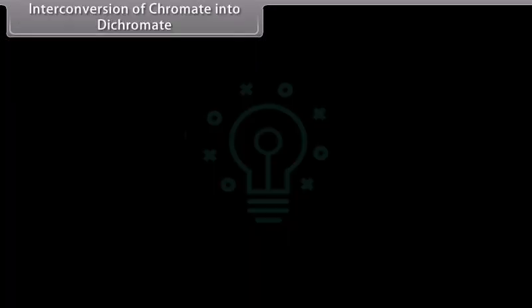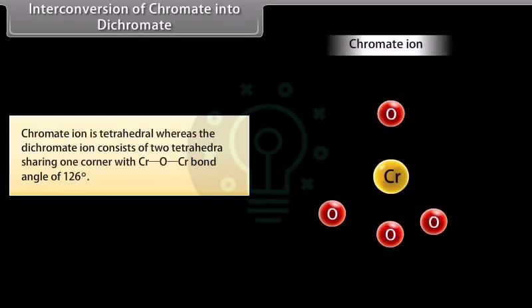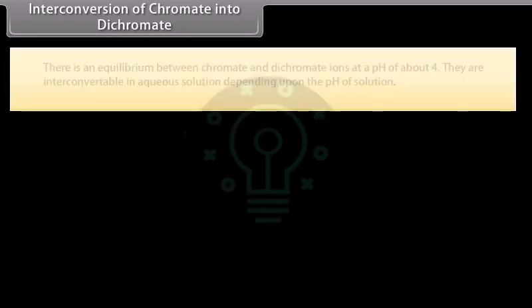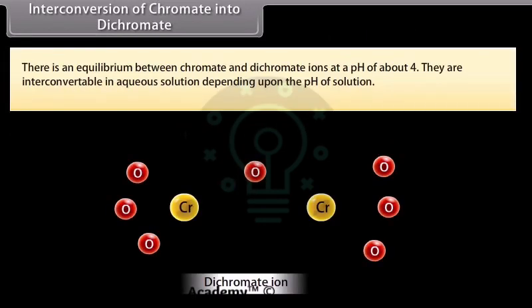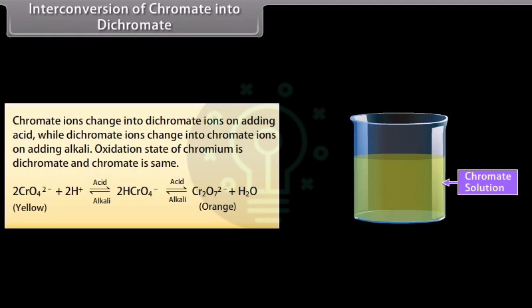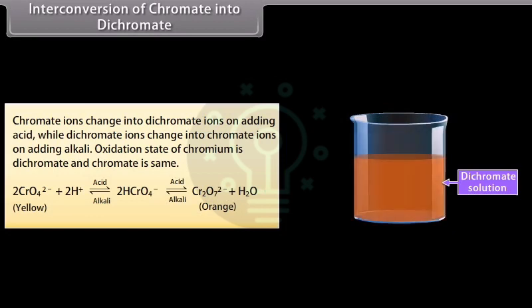The chromate ion is tetrahedral, whereas the dichromate ion consists of two tetrahedra sharing one corner with a Cr–O–Cr bond angle of 126°. There is an equilibrium between chromate and dichromate ions at a pH of about 4. They are interconvertible in aqueous solution depending on pH: chromate ions change into dichromate ions on adding acid, while dichromate ions change into chromate ions on adding alkali. The oxidation state of chromium in both dichromate and chromate is the same.